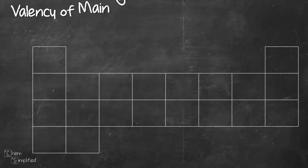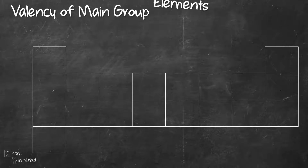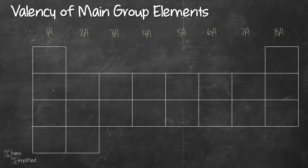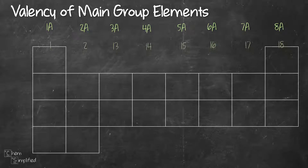By the end of this video, you'll remember the valency for the first 30 elements. Let's start with the first 20.